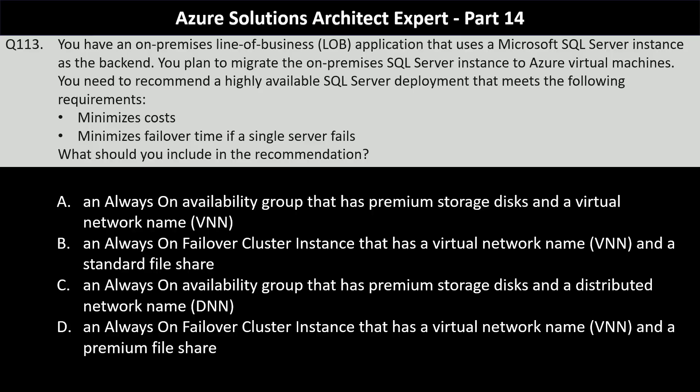Question number 113: You have an on-premise line-of-business application that uses a Microsoft SQL Server instance as the back end. You plan to migrate the on-premise SQL Server instance to Azure virtual machines. You need to recommend a highly available SQL Server deployment that minimizes costs and minimizes failover time if a single server fails. The options are: an Always On availability group with premium storage disks and a virtual network name; an Always On failover cluster instance with a virtual network name and a standard file share; an Always On availability group with premium storage disks and a distributed network name; or an Always On failover cluster instance with a virtual network name and a premium file share.